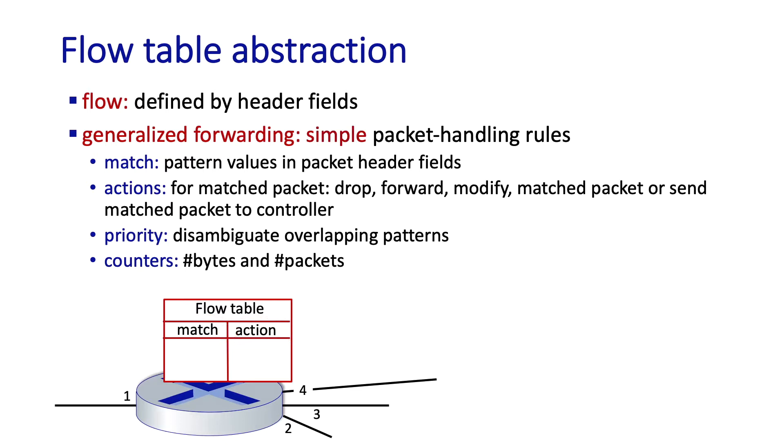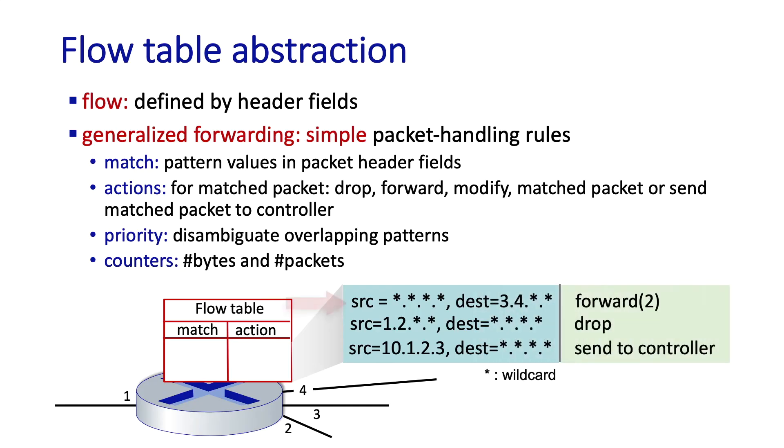Let's take a look at an example. The first match plus action rule says that any packet with a destination IP address of 3.4.16 should be forwarded to output 1. Note that the stars here represent wildcards or don't care values. The second rule says that any packet coming from 1.2.16 should be dropped, and the final rule says that any packets from source IP address 10.1.2.3 should be encapsulated and forwarded to the SDN controller.